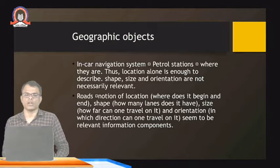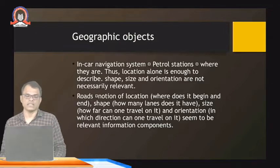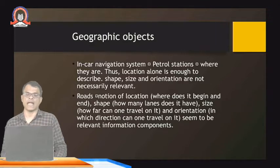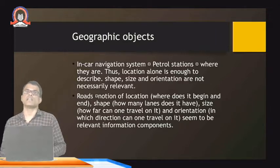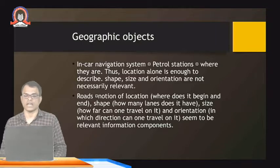The second example is roads. For roads, the location — where does it begin — is important; shape — how many lanes does it have; size — how far can one travel on it; and orientation — in which direction one can travel. When we are considering roads, all these parameters are important, so we have to consider all of them while representing roads in a GIS system.